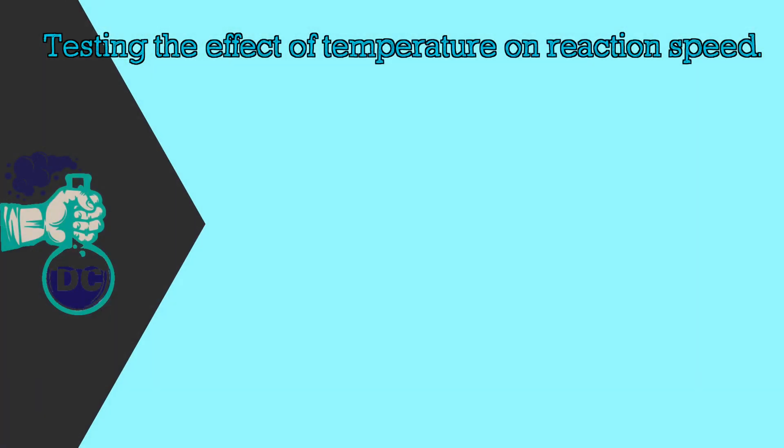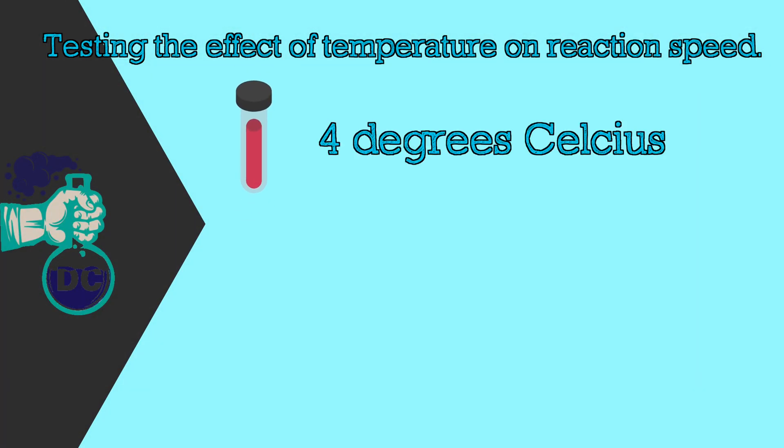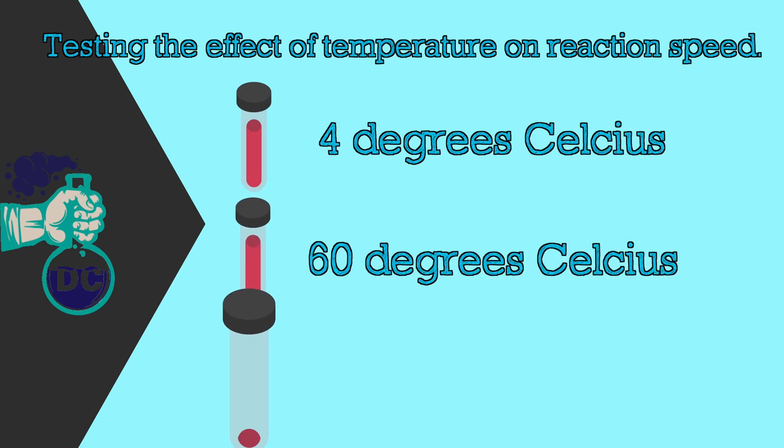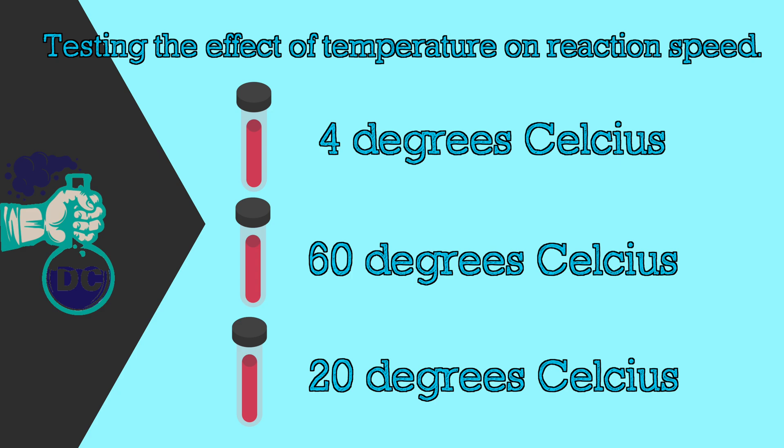We're actually going to divide this into three different parts where we're going to make one kind of cold in a fridge. We're going to heat one up to about 40 to 50 degrees Celsius and one in room temperature. We're going to see how that affects the speed of the reaction.